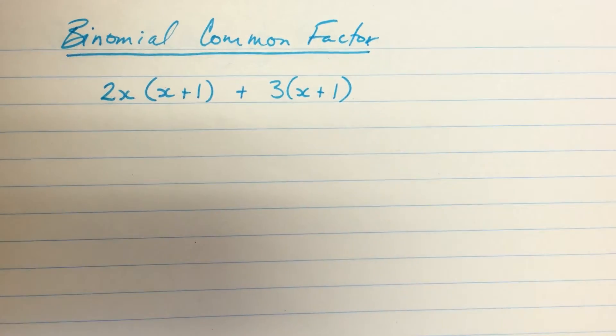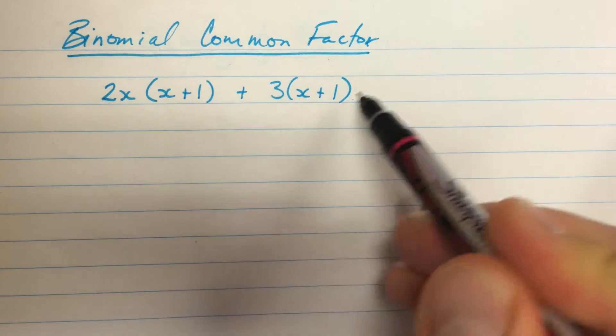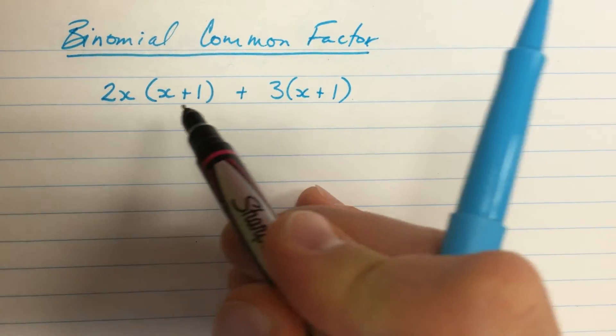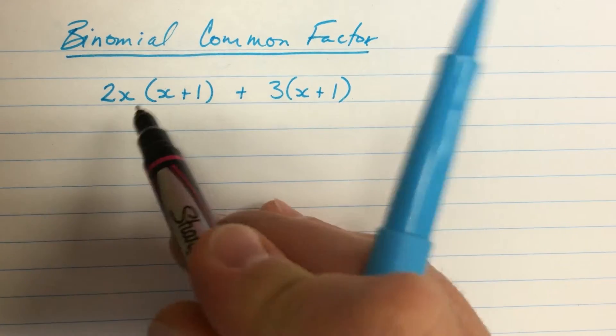You can see here in this expression we have 2x times x plus 1. Then we have plus 3 times x plus 1. These are sort of like super terms. There's a big term here and a big term here. Each is a product of two factors.